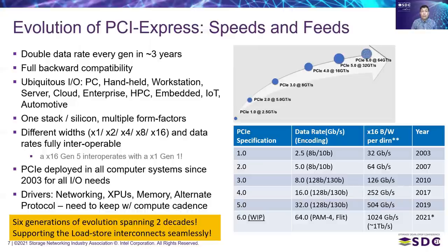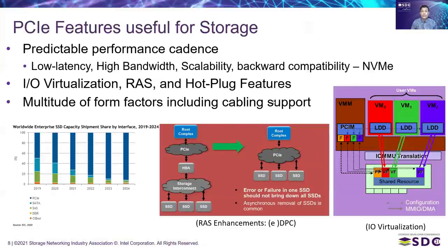Because PCI Express supports multiple protocols through its alternate protocol mode — ones with coherency and memory semantics such as CXL — those are the leading consumers for the higher data rate. As compute capability goes up within a given power envelope in keeping with Moore's law, the interconnect bandwidth also needs to scale to effectively feed that beast. Storage is steadily migrating to PCI Express due to its predictable performance cadence with low latency, and NVM Express is gaining wide traction.